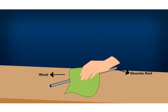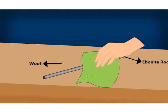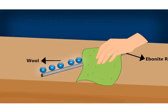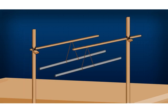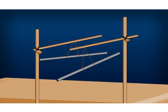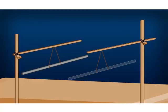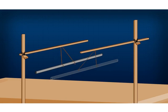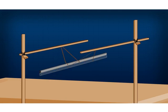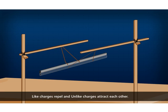When an ebonite rod is rubbed on wool, the rod develops a negative charge. Hang an ebonite rod rubbed with wool to a stand and bring another similar ebonite rod near it. You will observe that they repel each other. Now bring a glass rod rubbed with silk near the ebonite rod. You will observe that they attract each other. From this, we can infer that like charges repel and unlike charges attract each other.